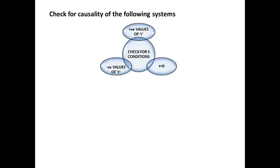Problem: check for causality of the following system. Before doing the problem, the preliminary procedure for checking causality is to check for 3 conditions — for positive, negative, and zero values of time. For all these 3 cases, positive, negative, and at time t = 0, you have to check the system. The first problem uses a continuous time system.